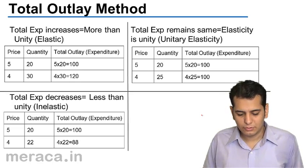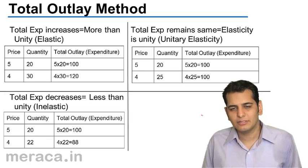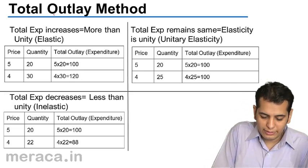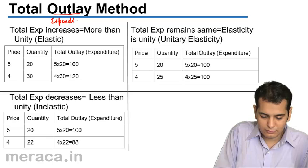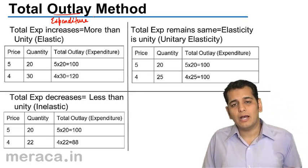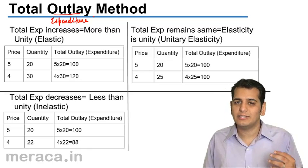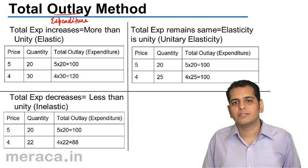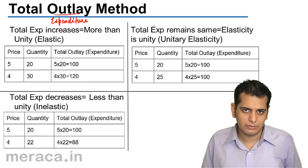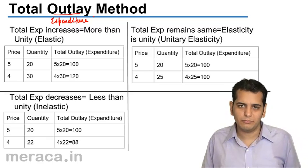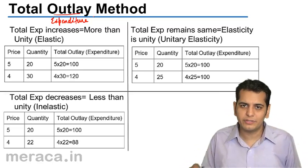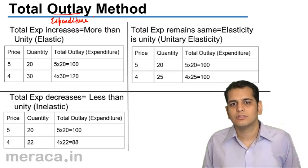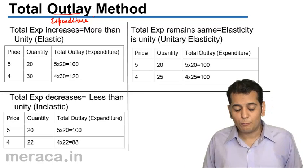The Total Outlay Method of finding elasticity is based on the expenditure made — 'outlay' itself means expenditure. The amount of expenditure determines the elasticity of demand: when expenditure increases, demand is elastic; when expenditure remains the same, elasticity of demand is unitary; and when expenditure reduces, elasticity of demand is inelastic.